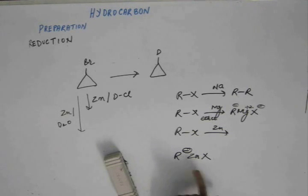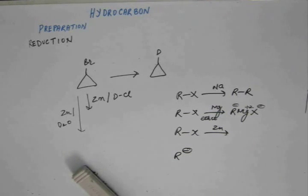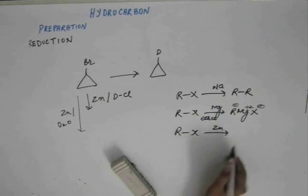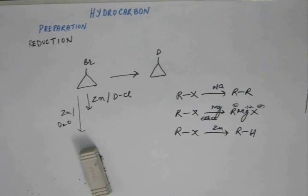But we don't have this complex like R-Zn-X as we have R-Mg-X. The reason being the zinc has a lesser tendency to form complex. So this complex is not formed. When this complex is not formed, then R- cannot remain as it is. So it has to accept a proton from somewhere and it results in R-H. As you can see, the product of all the metals are different.